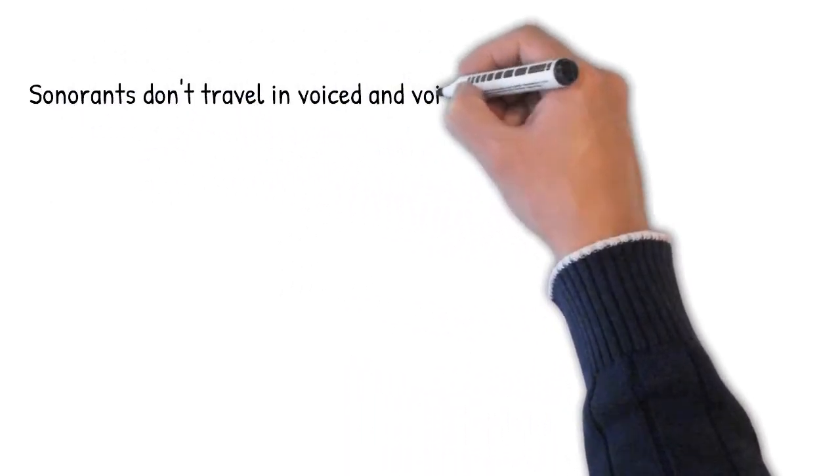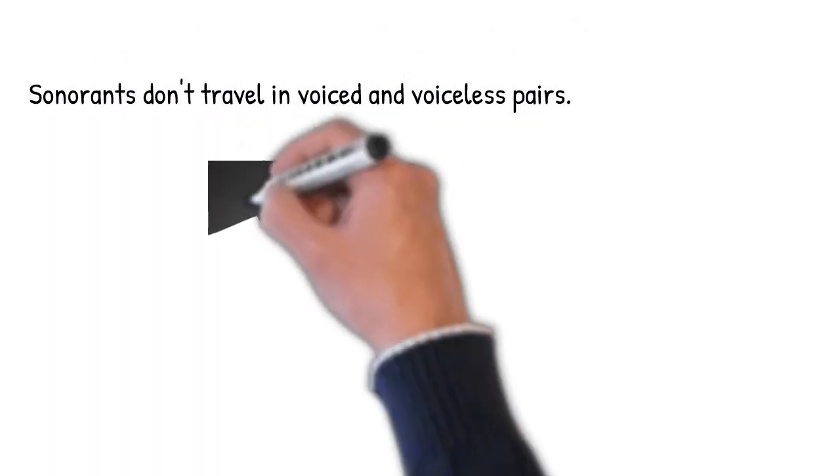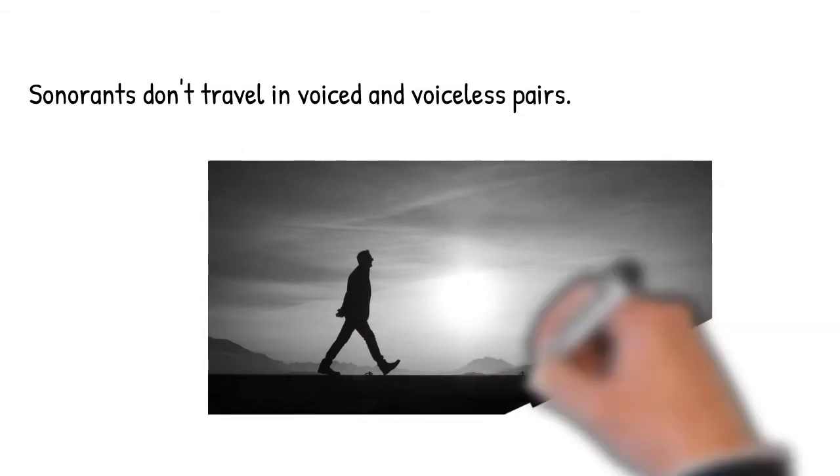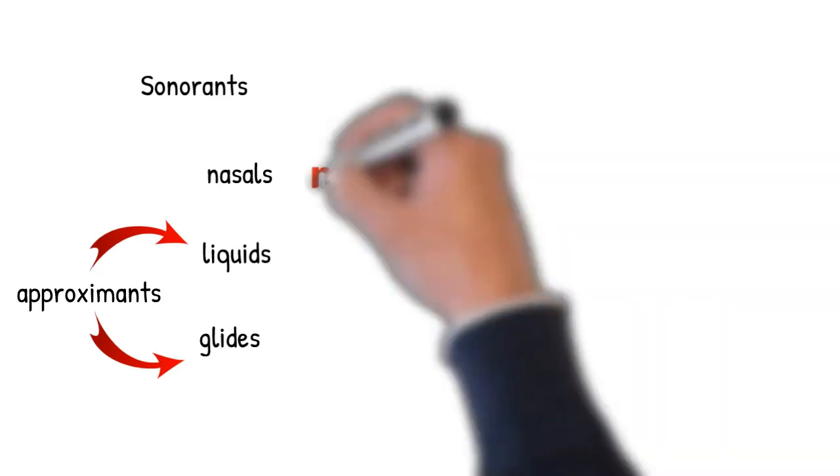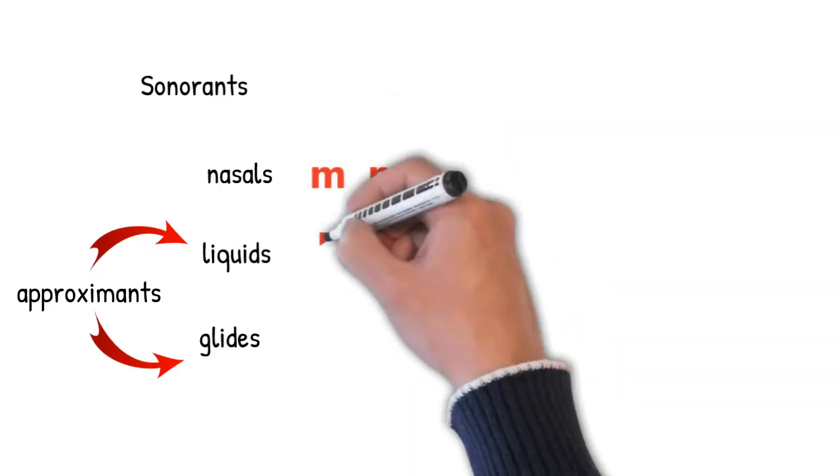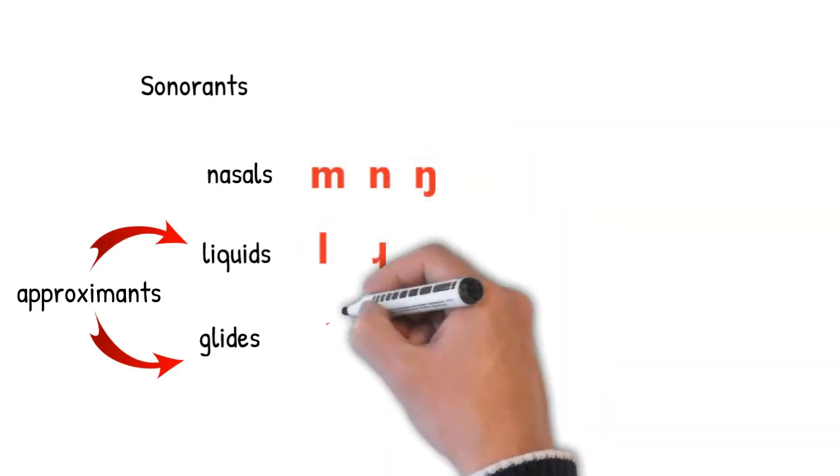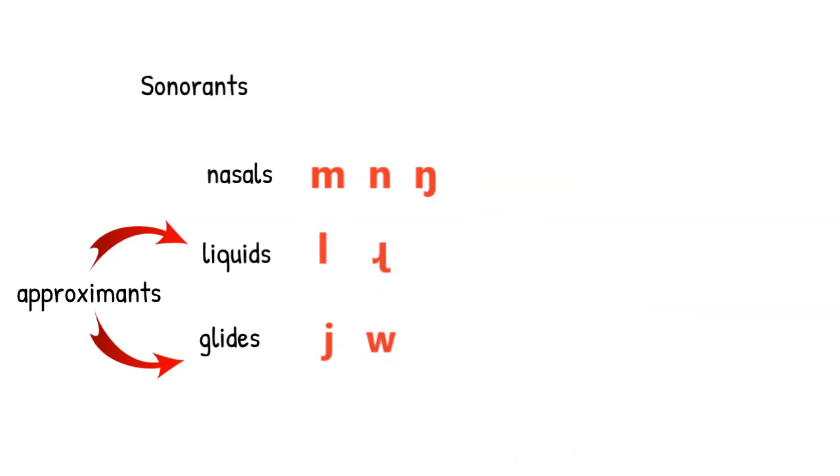So, sonorants are loners in the sense that they don't travel in pairs of voiced and voiceless counterparts. But they're not loners in the sense that, as a group, they're almost always all voiced sounds, as we can see in the example using the English sonorants here.